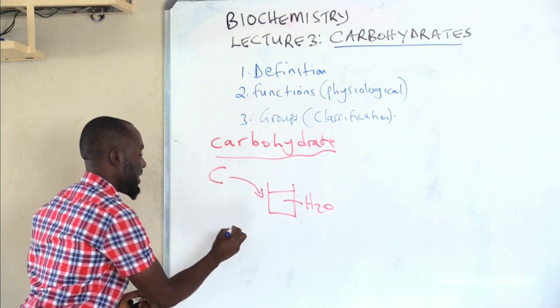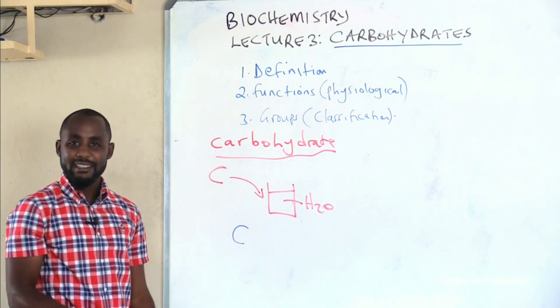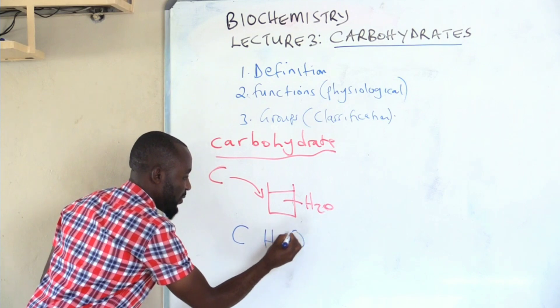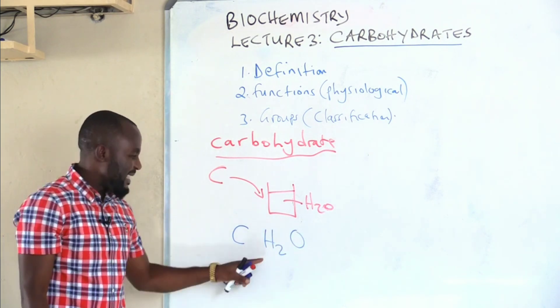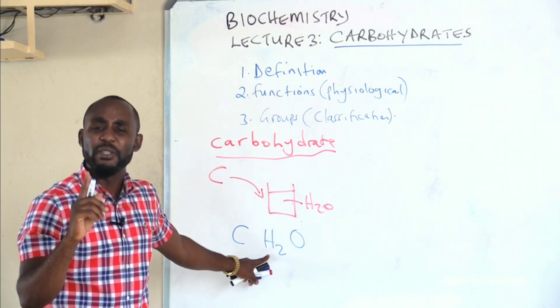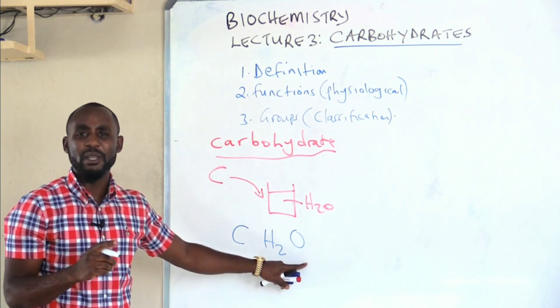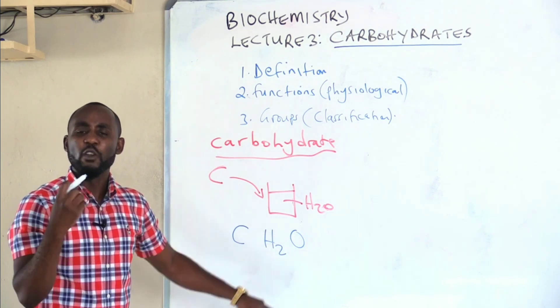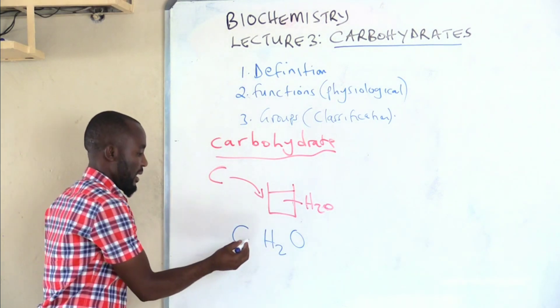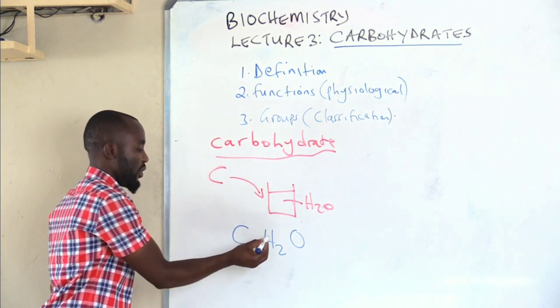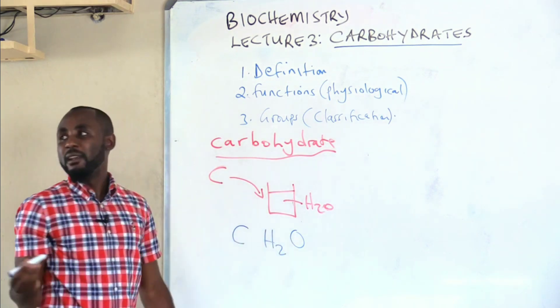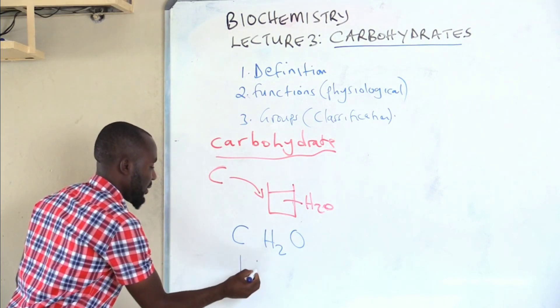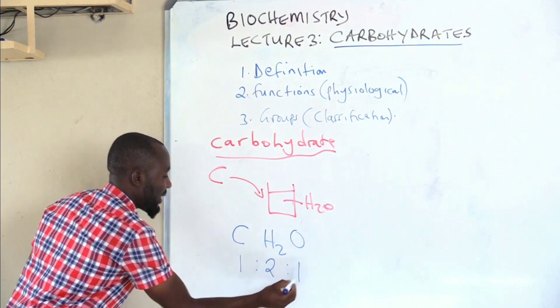Having said that, we are simply saying carbohydrates are made up of carbon, two hydrogen atoms, and one oxygen. But this doesn't mean all the carbohydrates on earth have this as their molecular formula. All we are saying is that carbohydrates are normally made up of the elements carbon, hydrogen, and oxygen, which are normally dissolved in the ratio one to two to one.